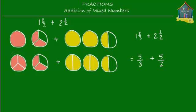But one slice of pepperoni pizza is not the same size as one slice of cheese pizza. The blue-shaded pepperoni pizza slice has a different size than the green-shaded cheese pizza slice. So you cannot add them in the state they are — if you want to add them, you must first change the size of the slices so they are the same size.